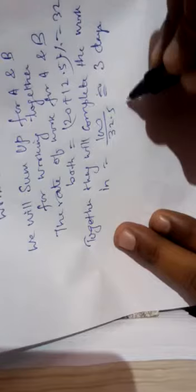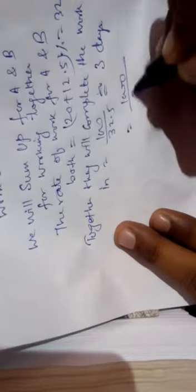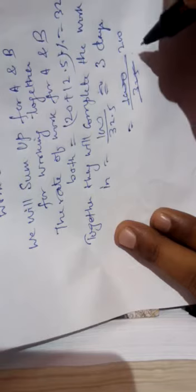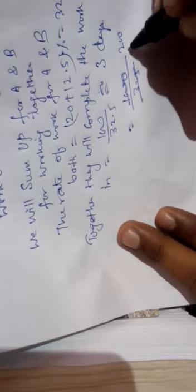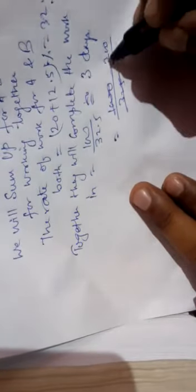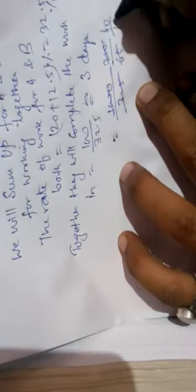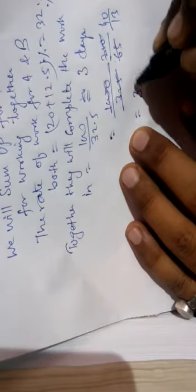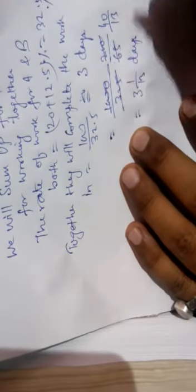Divide 100 by 32.5, that will come to 1000 by 325, that will come up to 200 by 65, that will come up to 40 by 13. And the final answer is 3 whole and 1 by 13 days, that will be the answer.